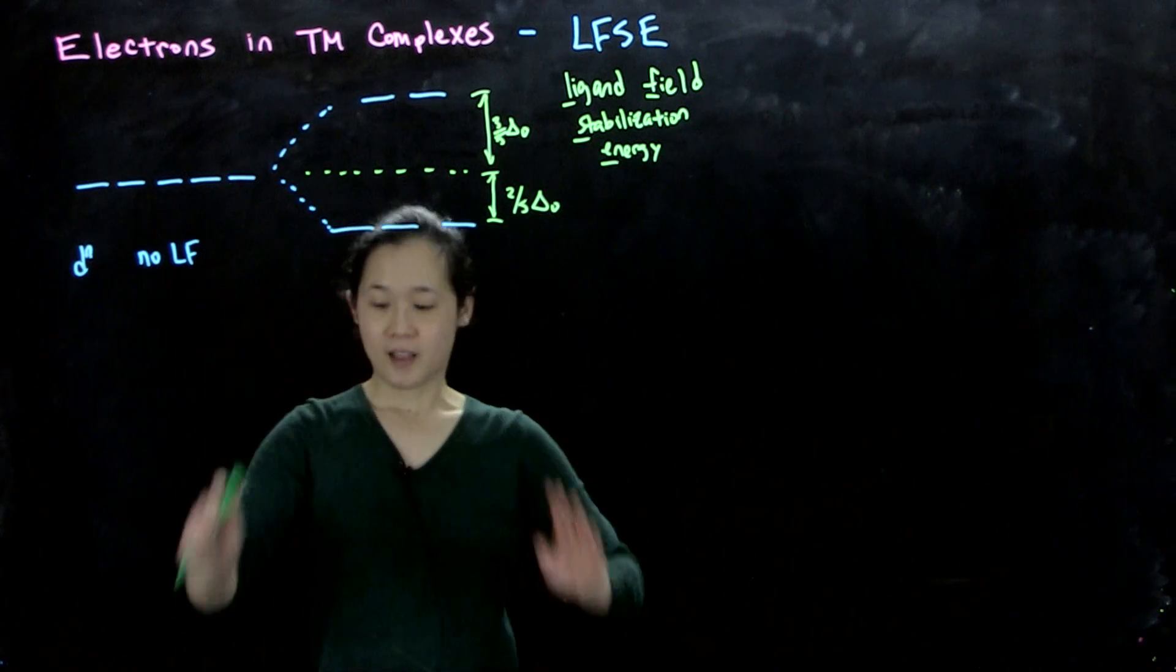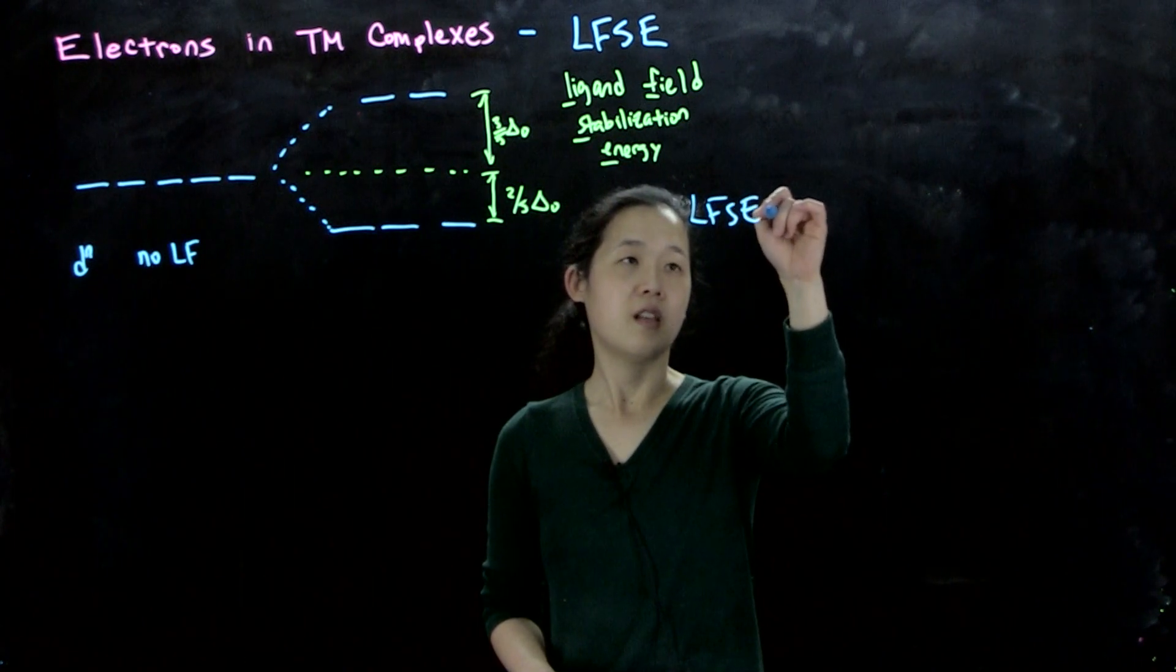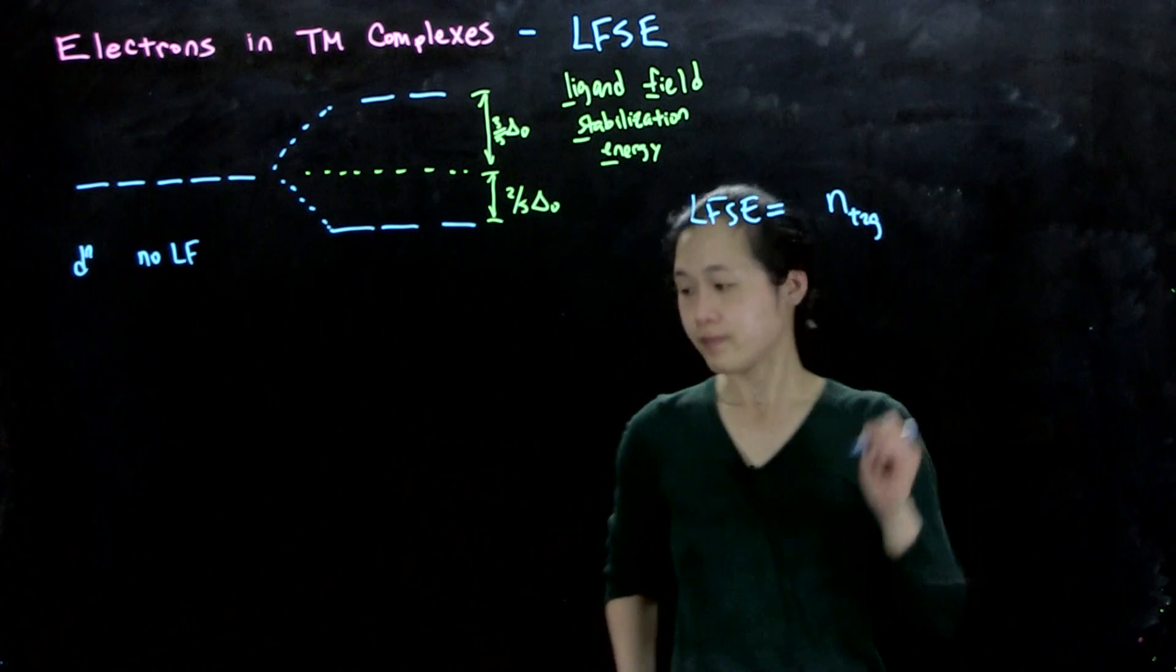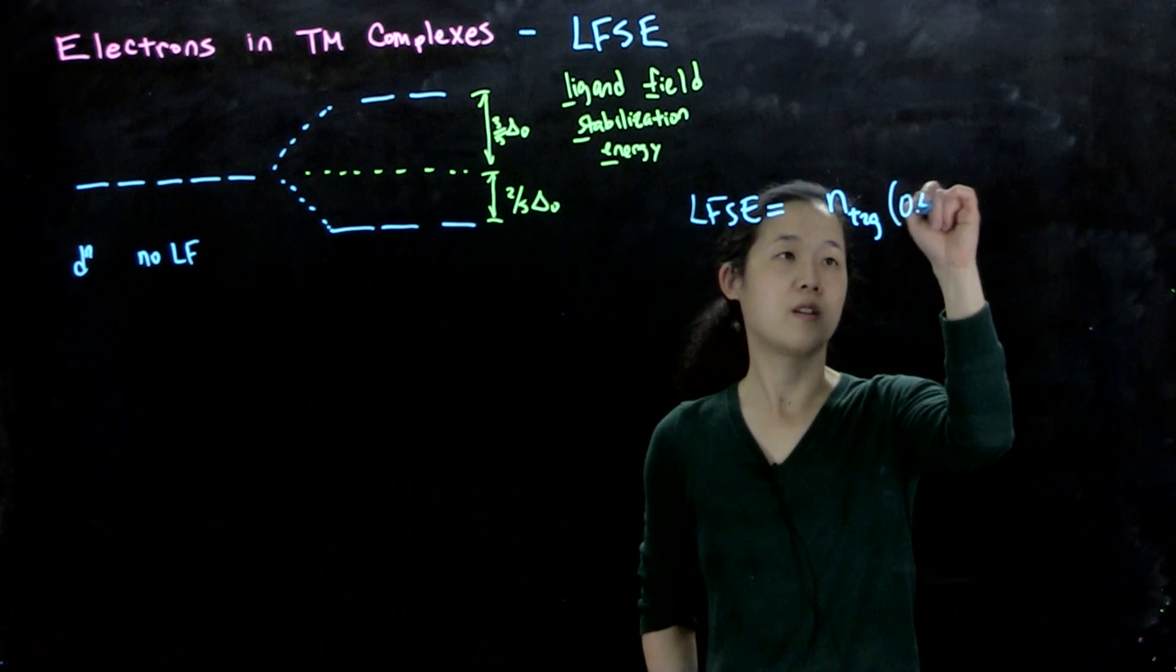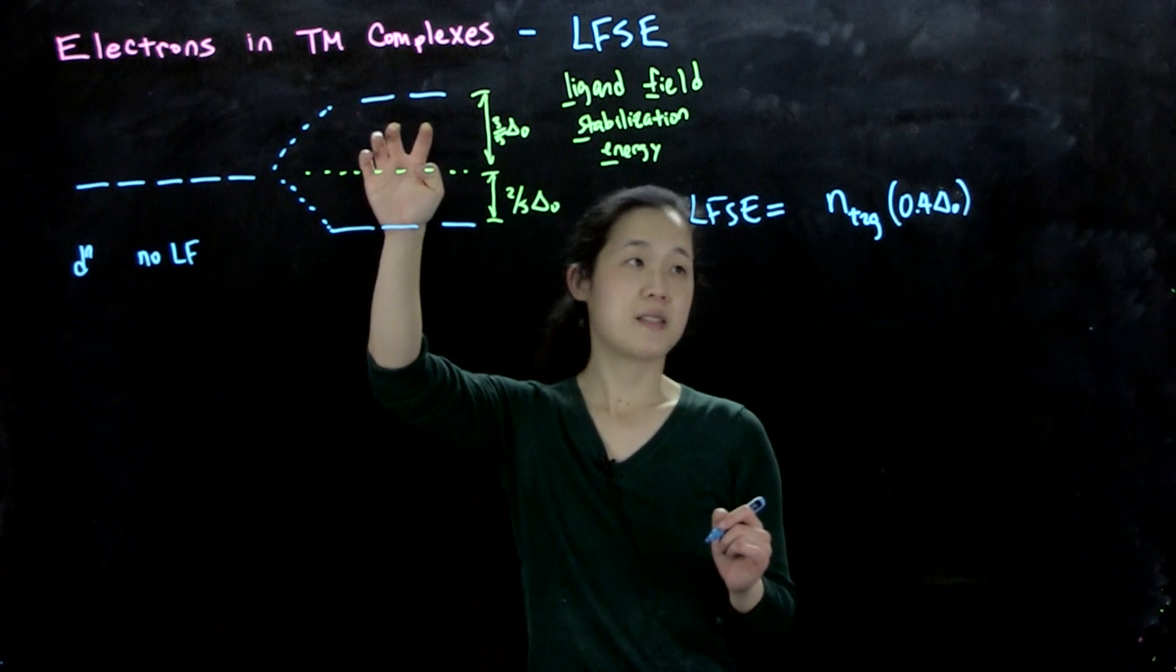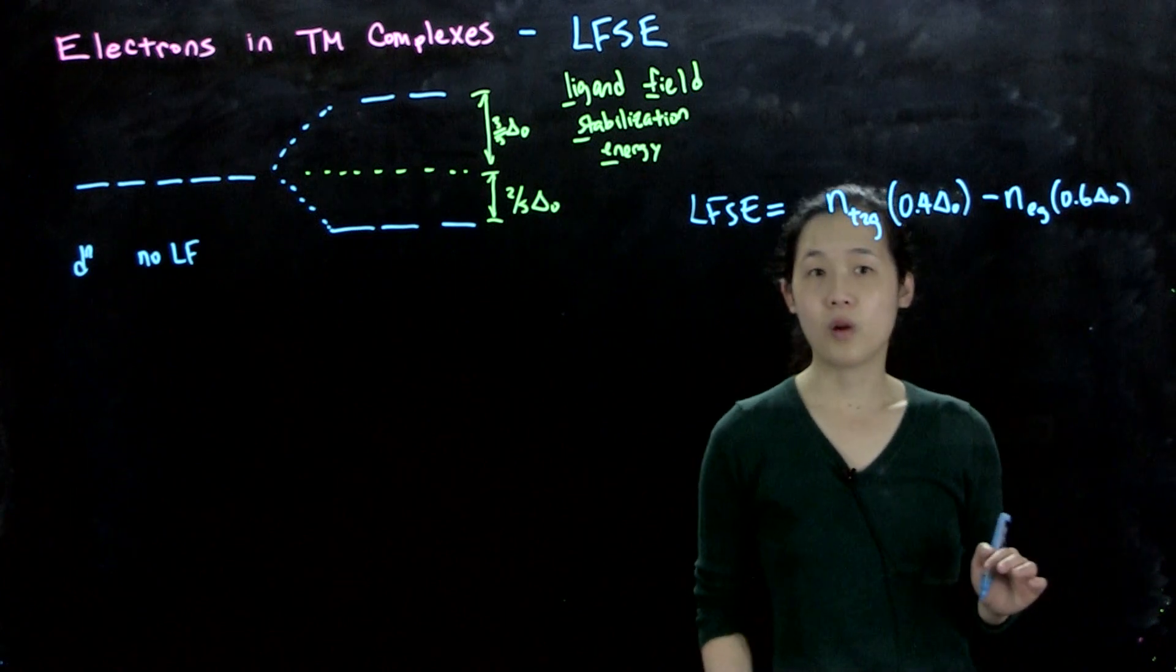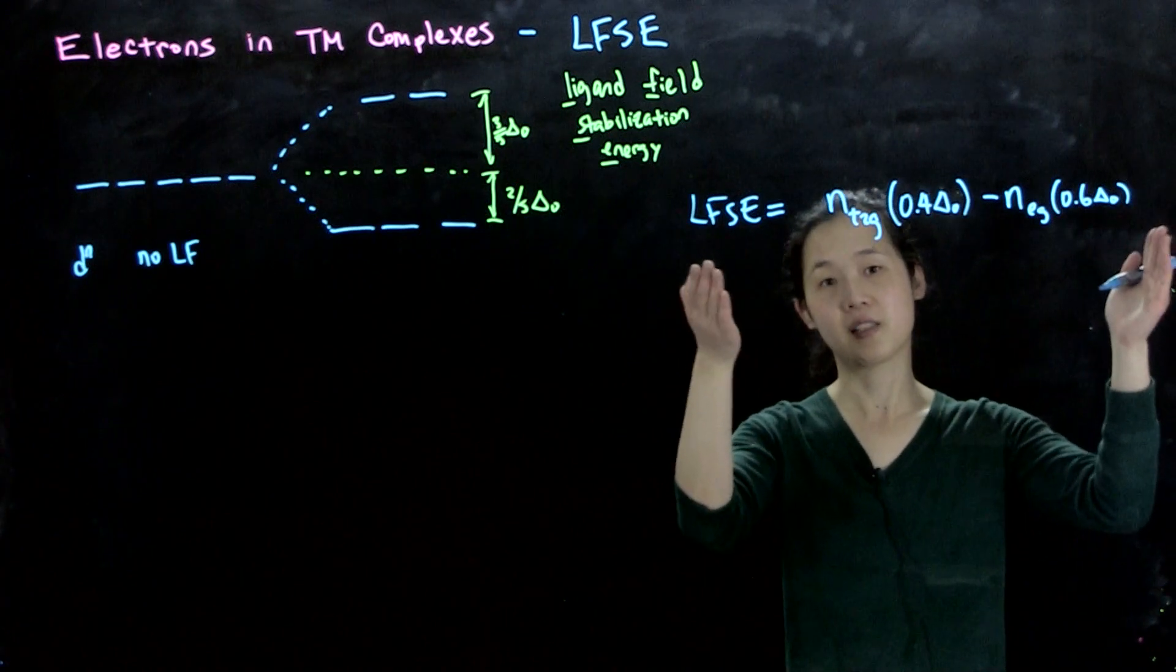So basically, as we're trying to find the LFSE, T2G equals the number of electrons in your T2G, which will be stabilized by two-fifths delta O, so 0.4 delta O. And then any electrons in this EG set are destabilized, so we'll subtract our electrons in EG, 0.6 delta O. We'll take this as positive for stabilization. It's typically the opposite of what we normally do, but as long as you keep your convention correct, it doesn't really matter.